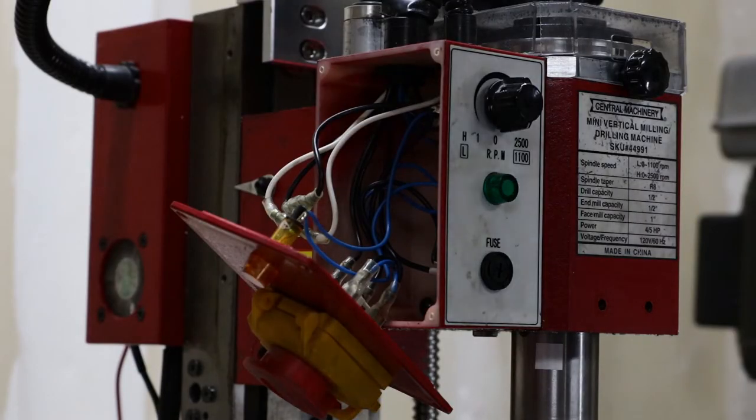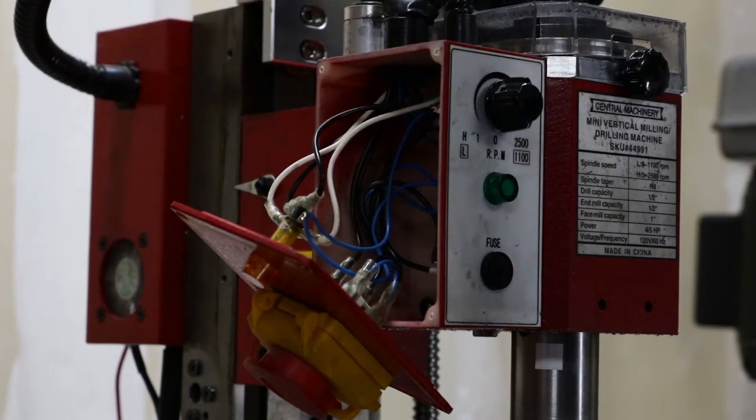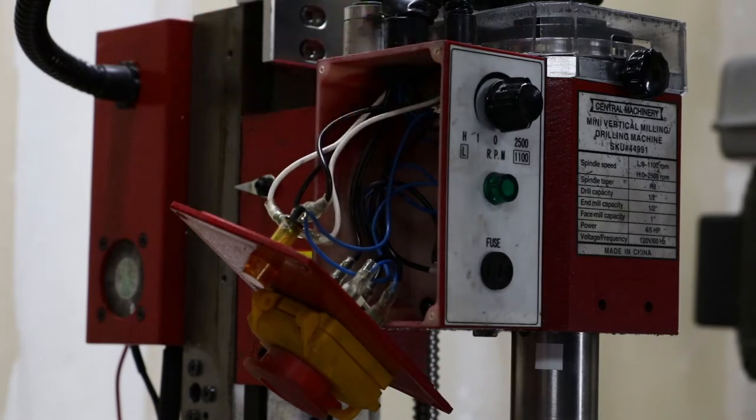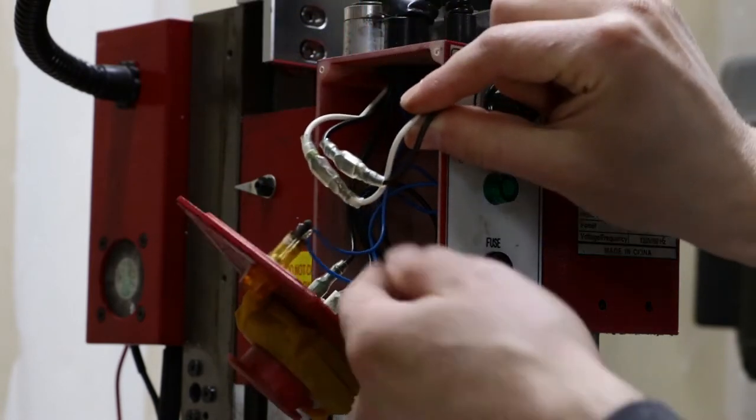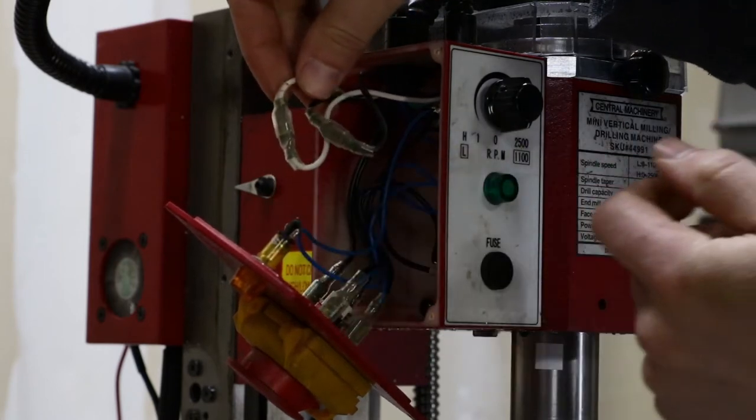So I popped this side cover open, and like I said, I got a black and a white wire coming from this back box, coming through the loom, and then just should be looping down here. First thing I pull out is a black and a white wire, and they just got a little connector there, so that's pretty convenient.